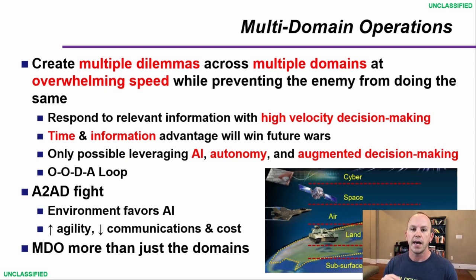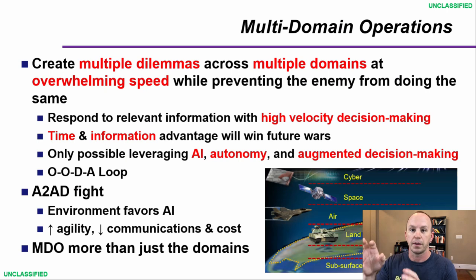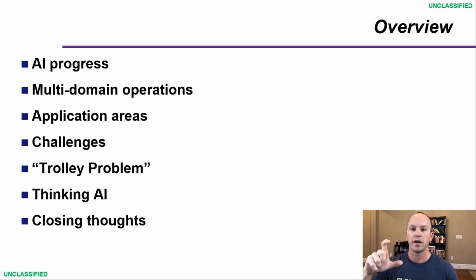Multi-domain operations is more than just bringing stacked domains to bear. It's a synergized approach at hypervelocity, addressing that holistic problem of multiple dilemmas across those domains. Here's what we'll cover: multi-domain challenges, a trolley problem real-world example, how to think about applying AI and where, and then I'll close.